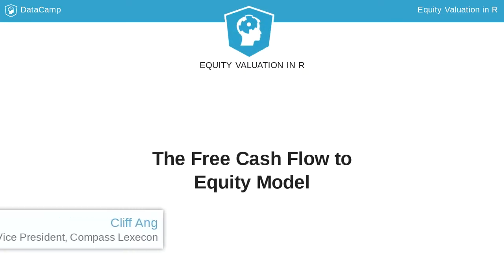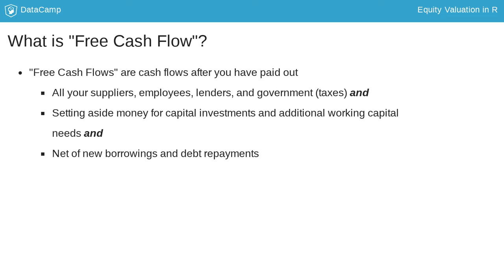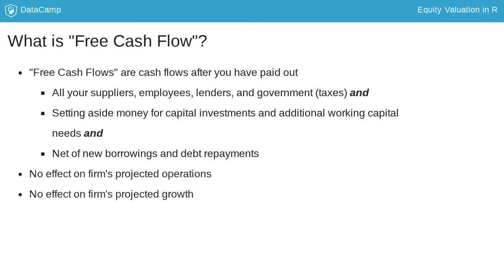Now we turn to discussing the Free Cash Flow to Equity model in more detail. The first DCF approach you will learn is the Free Cash Flow to Equity, or FCFE, model. FCFE is cash flow after you have paid off all your suppliers, employees, lenders, and taxes, as well as after deducting amounts you need for additional capital investments and working capital. For simplicity, we will assume new borrowings offset debt repayments. So Free Cash Flows are cash flows you can take away from the firm and give to the shareholders without affecting the operations and growth prospects of the firm.